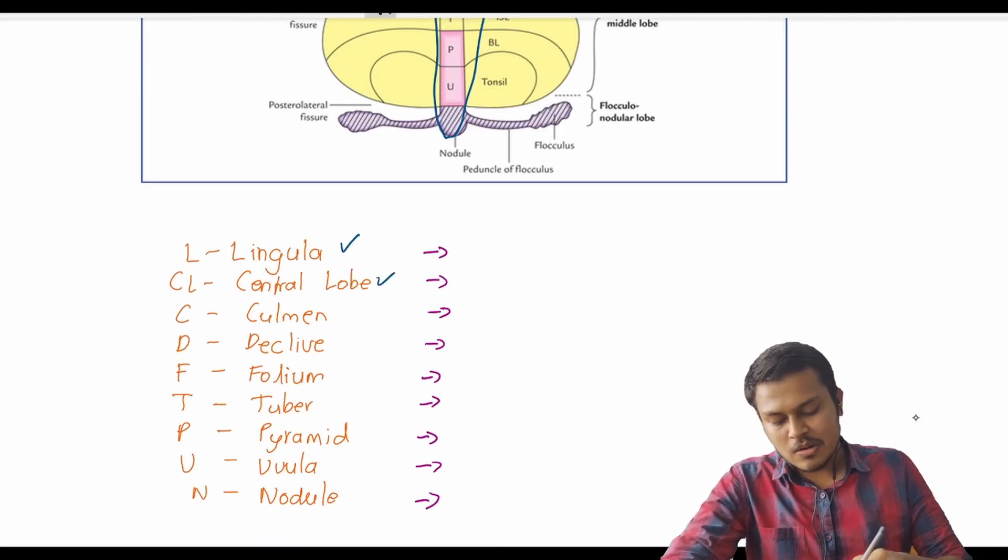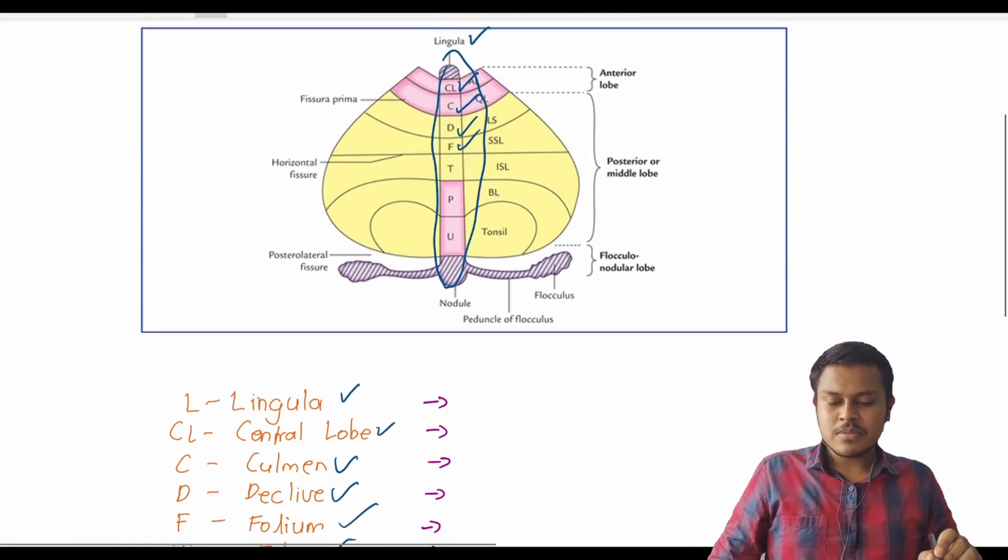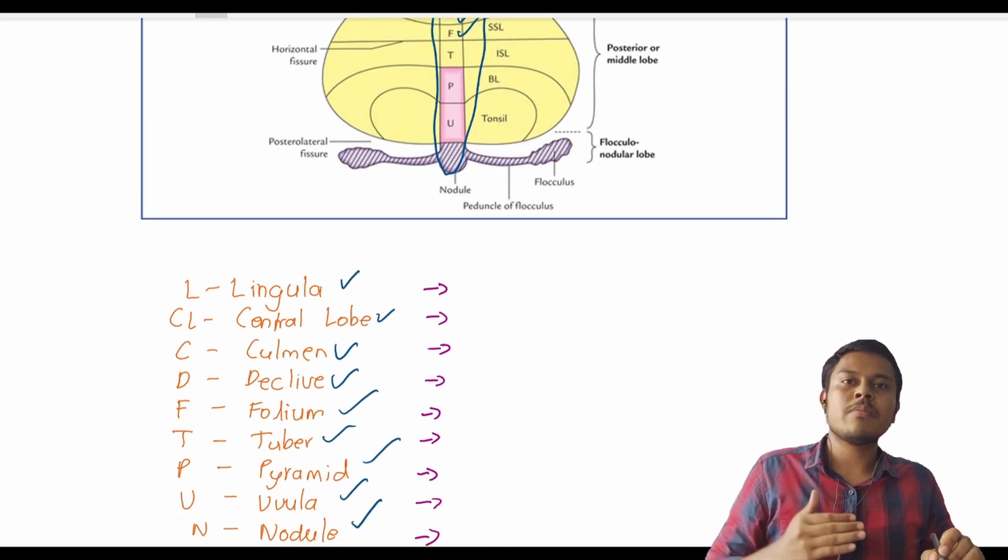Lingula, central lobe, culmen, declive, folium, tuber, pyramid, uvula, and nodule. It becomes difficult for us to answer and also to remember in order.